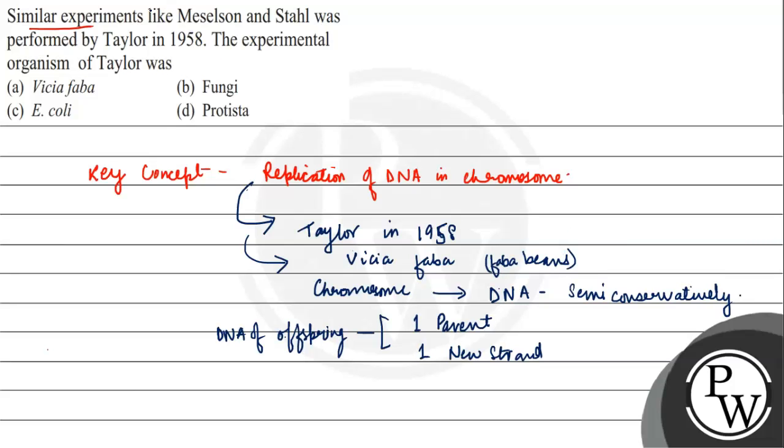Similar experiment like Meselson and Stahls. Meselson and Stahl ne, jho model organism choose kiya tha, that was E. coli. Generation time ke basis peh, or cesium chloride gradient formation ke basis peh, it only decide kiya tha ki replication of DNA kaise hota hai.